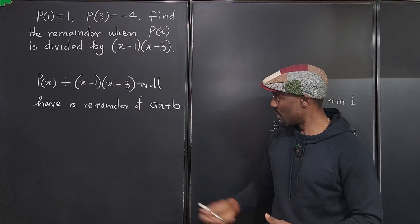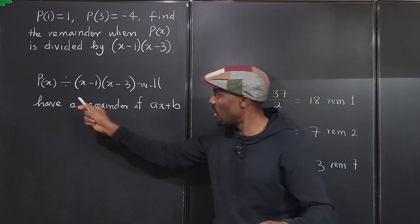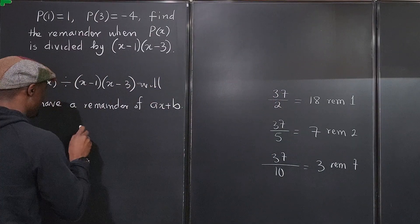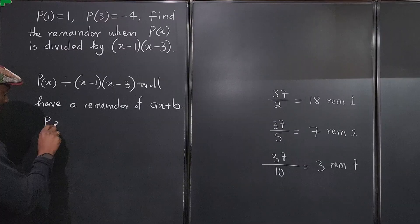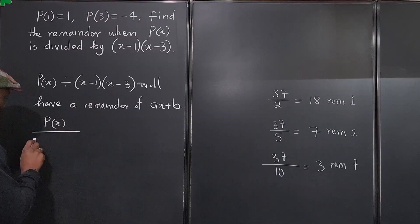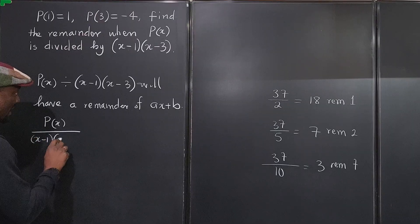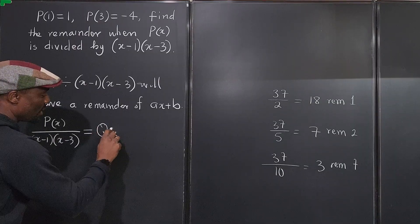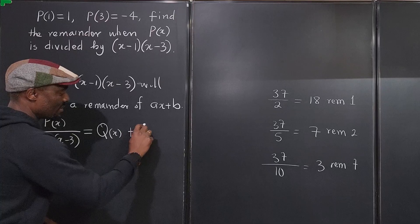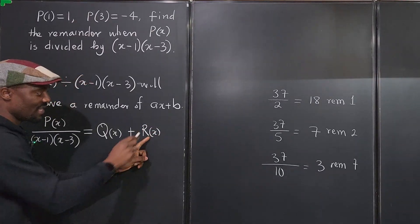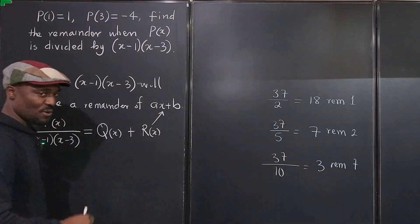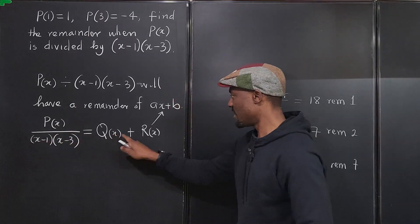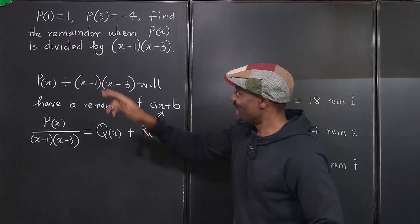To figure out what the remainder is, we first write the polynomial in division form. Whenever you do a polynomial division, P(x) divided by (x-1)(x-3) gives some quotient Q(x) plus the remainder. We already said the remainder is ax + b. We don't know what the quotient is, but we know this is the structure of the division.